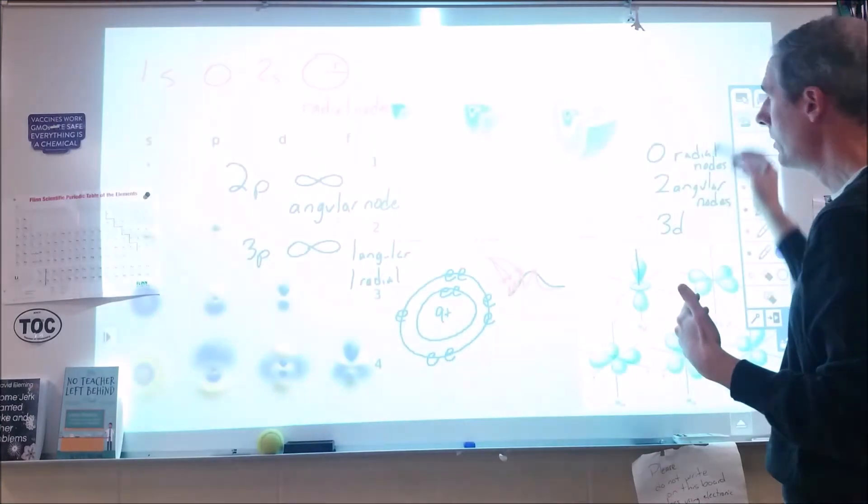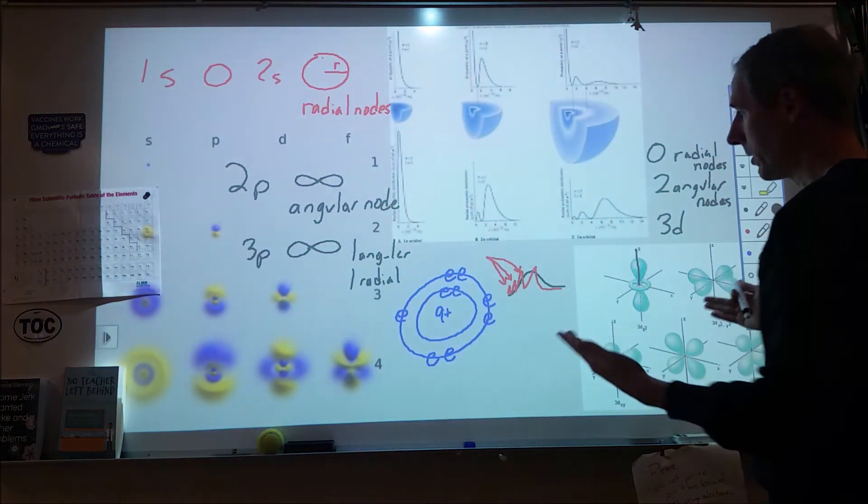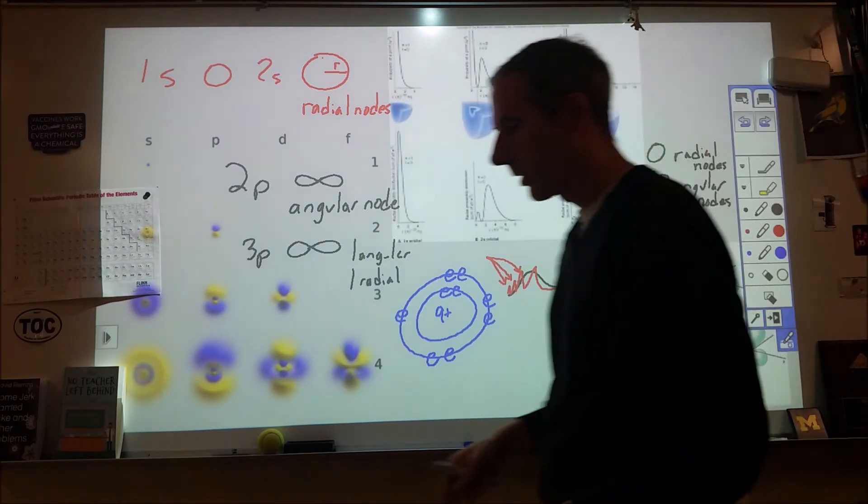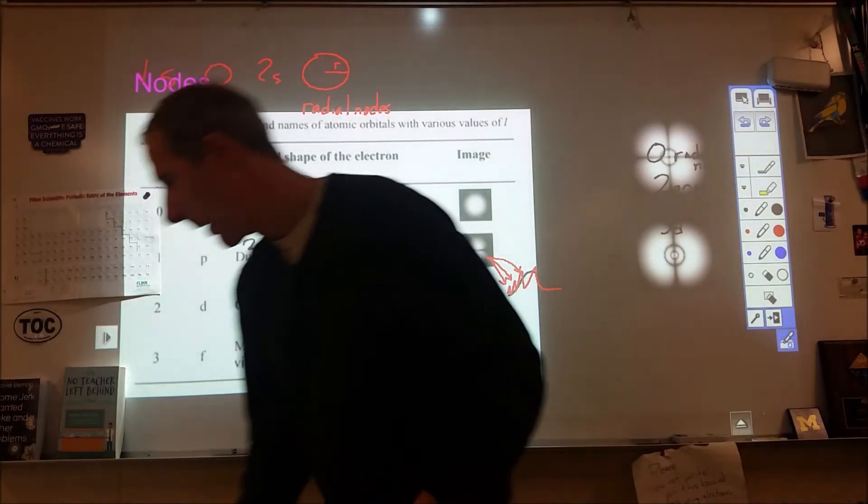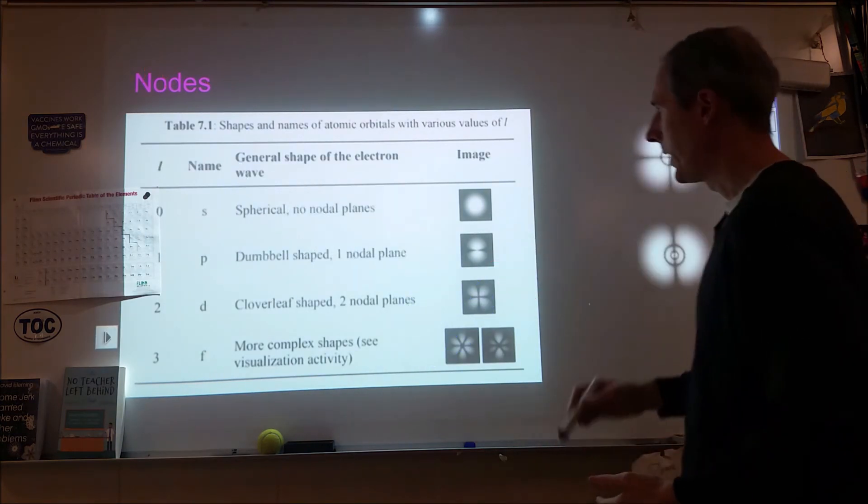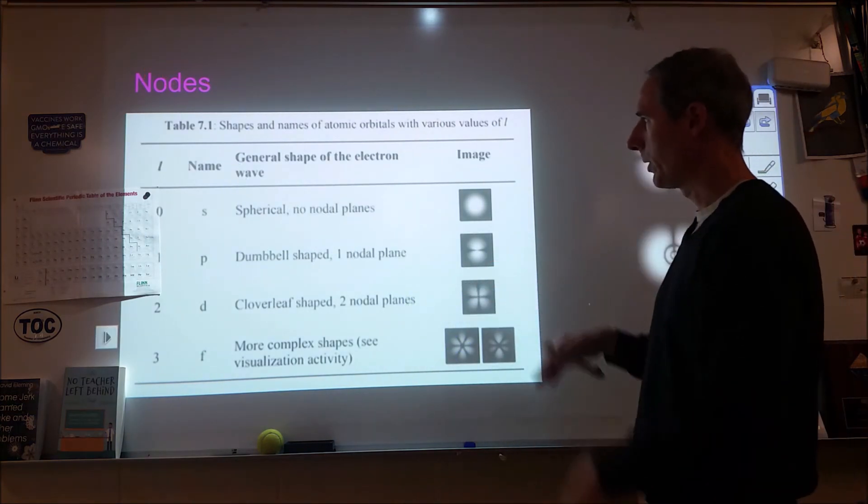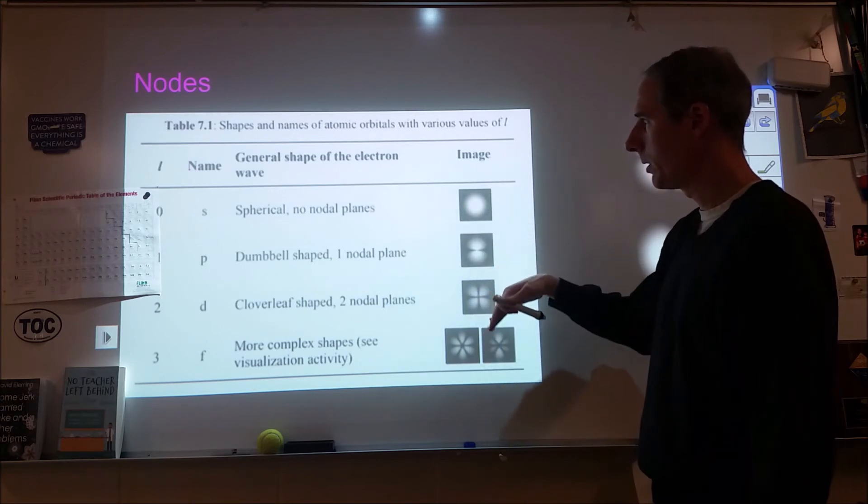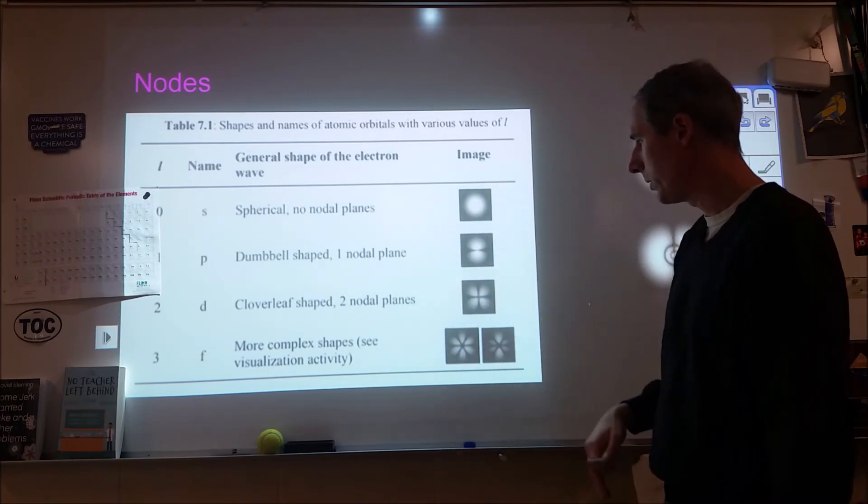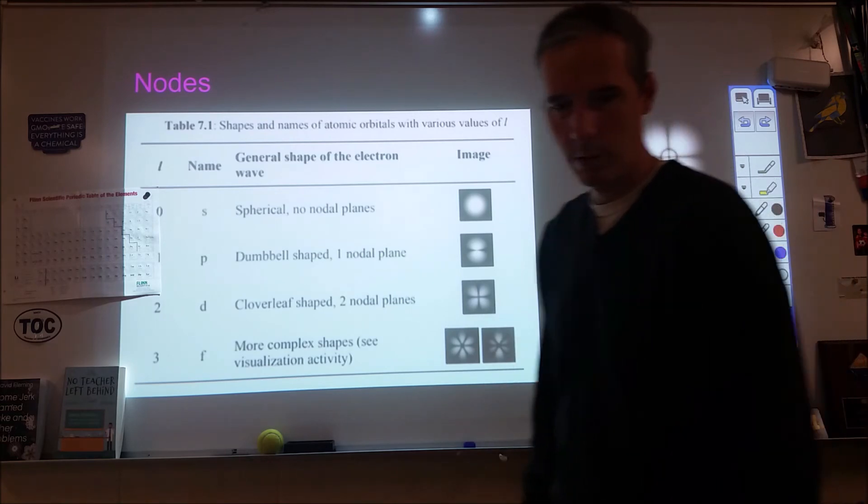So the result is that the 4s and the 3d end up at a similar energy state where things are kind of equal. And that allows us to then see things where we have the 4s and 3d in a similar energy level. So here's an s orbital, here's that angular node for a p orbital, here's the two for a d orbital, and then f gets into three of them.